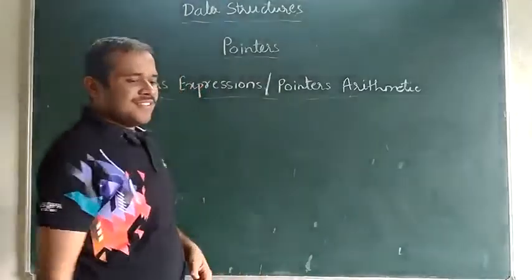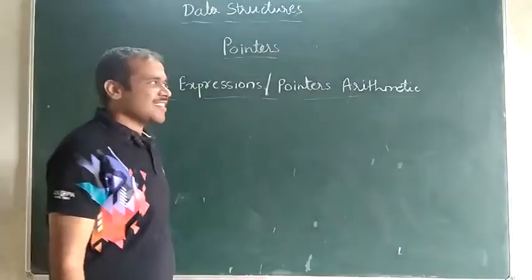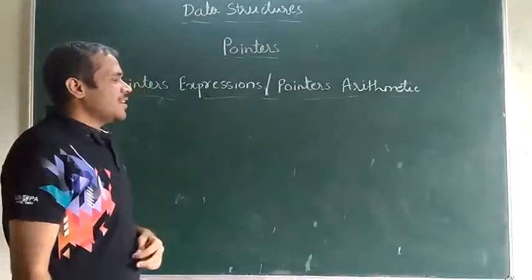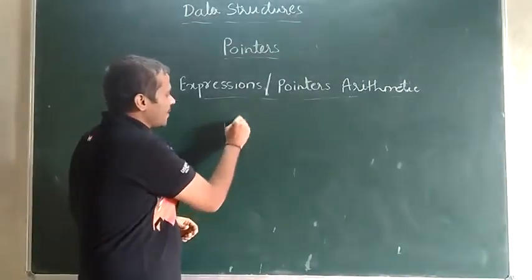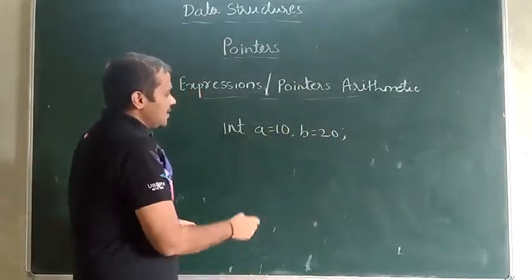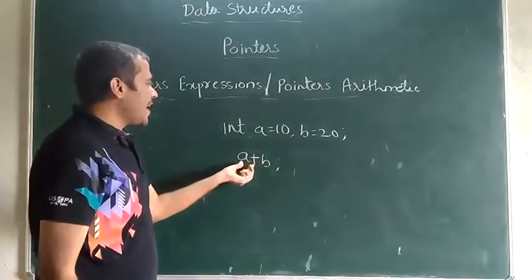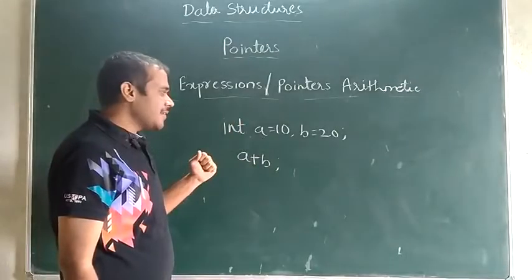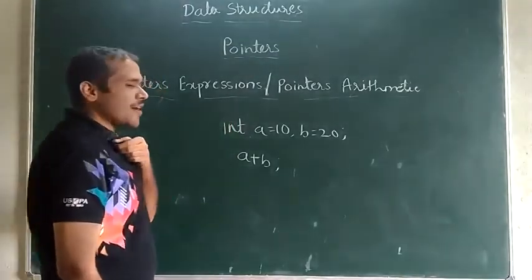Today let us discuss the new concept: pointer expressions, or pointer arithmetic. We can do arithmetic operations on normal variables — for example, int a equal to 10 and b equal to 20, we can add a plus b. So can we add pointer variables? Yes, it can be done. That is the new concept: pointers arithmetic or pointer expressions.